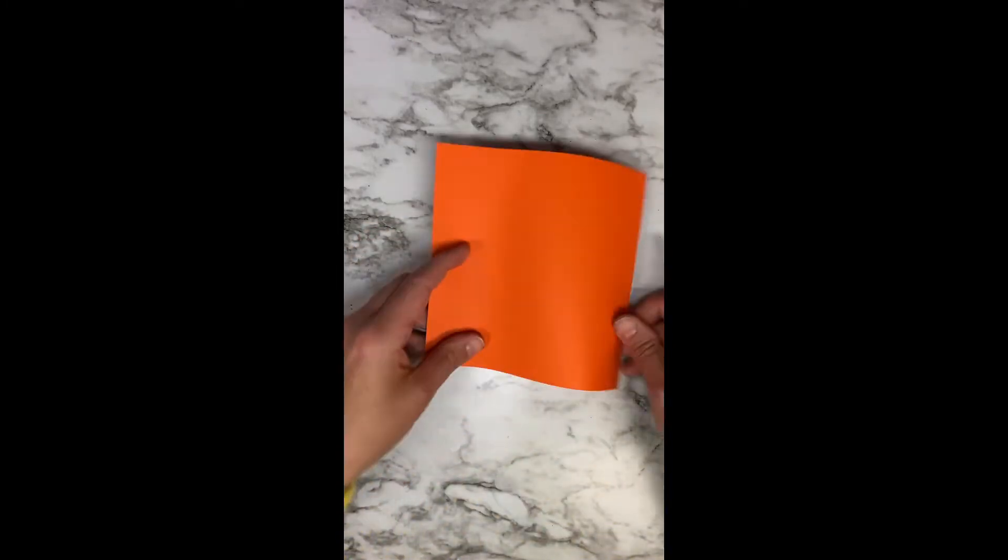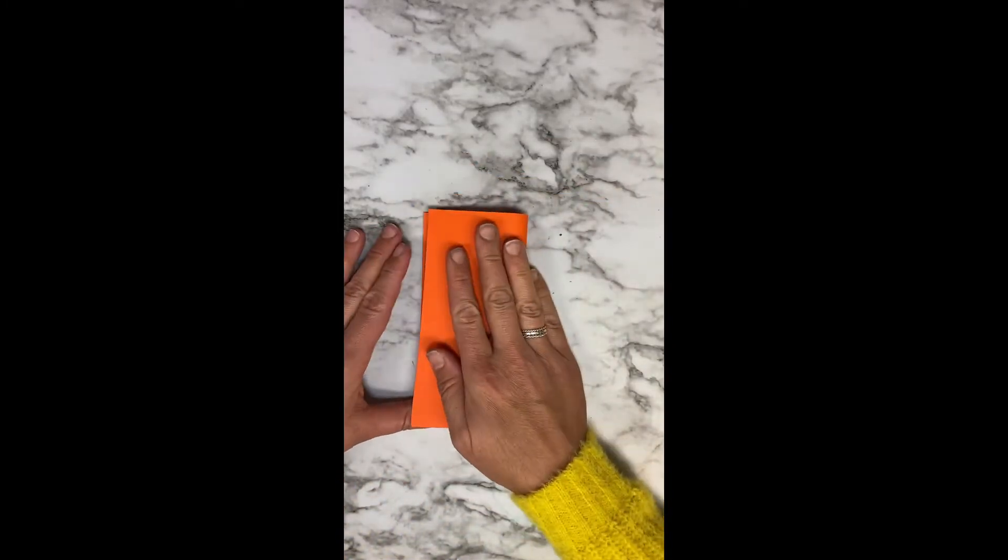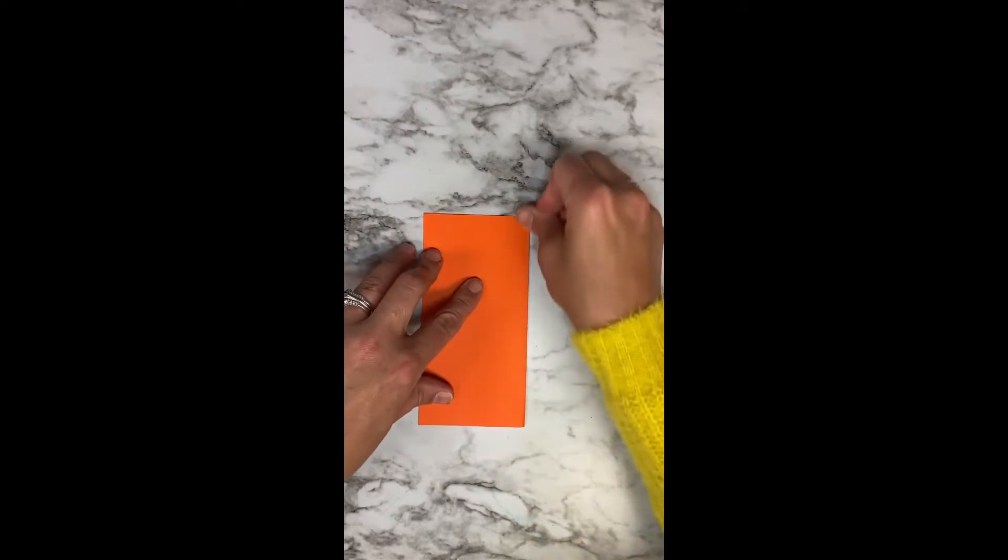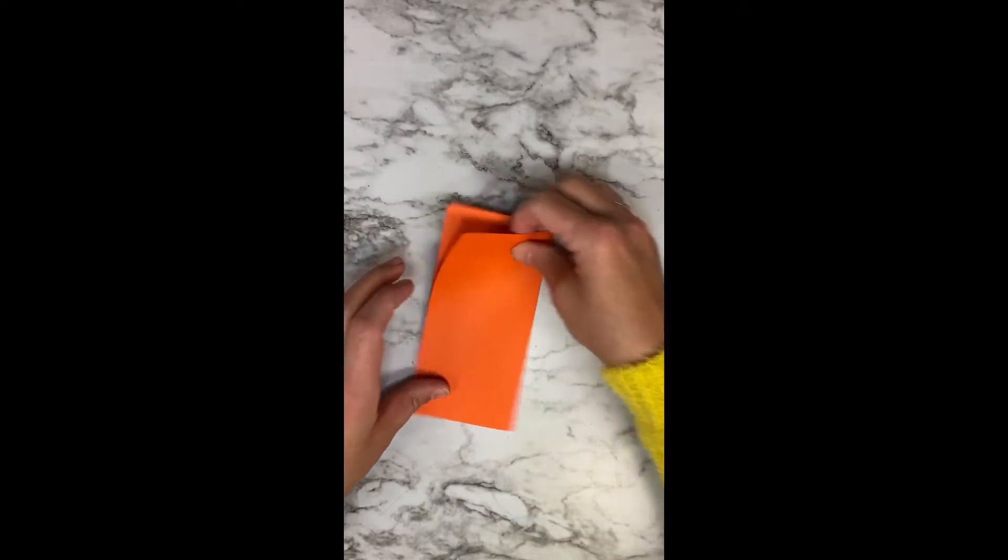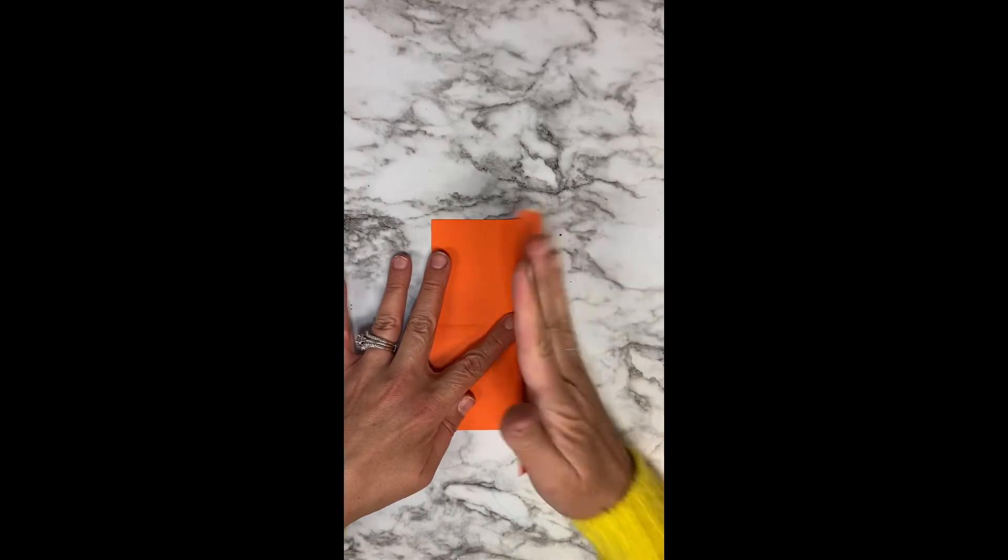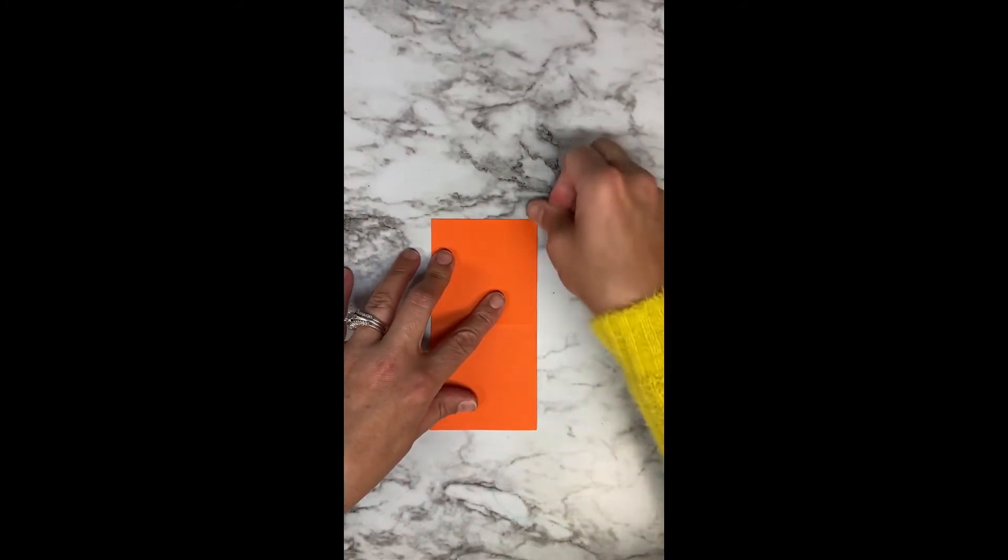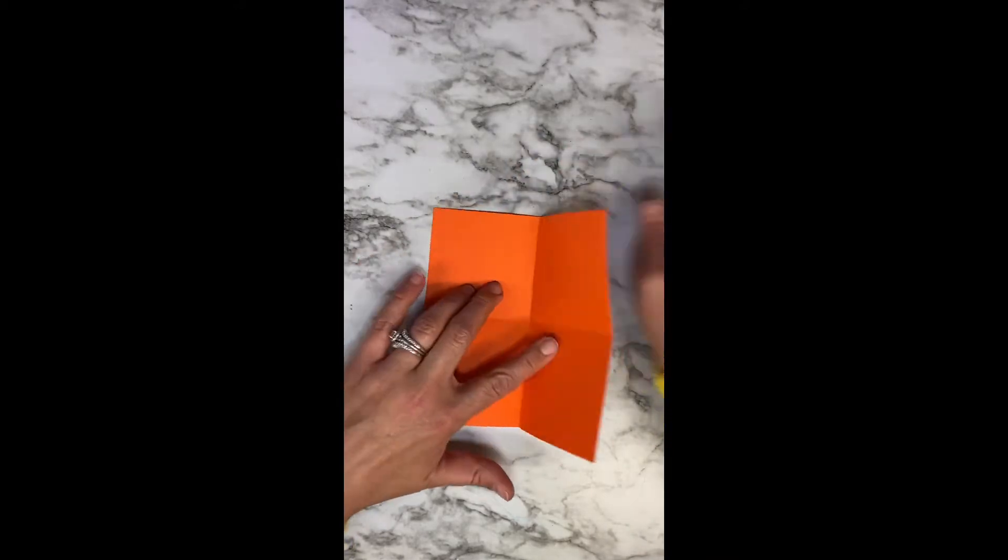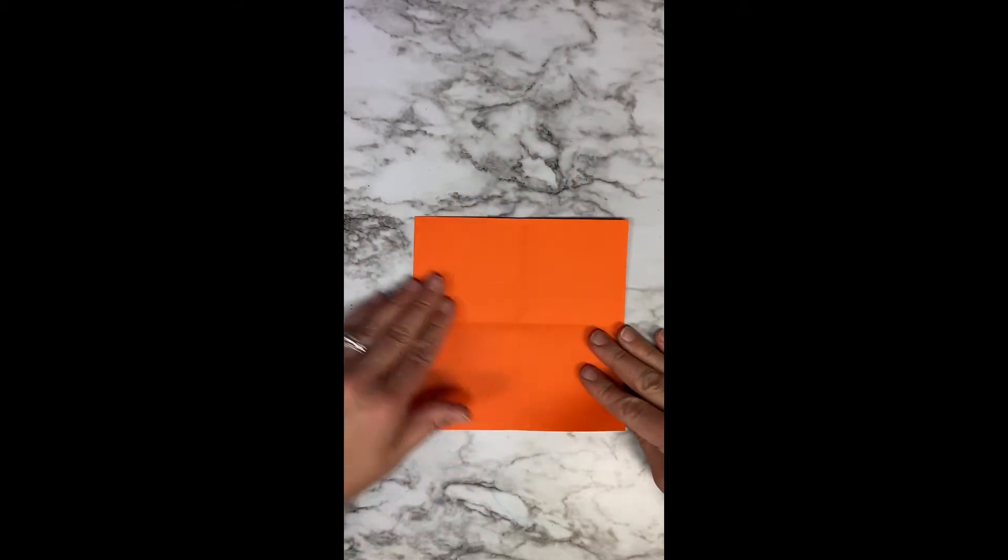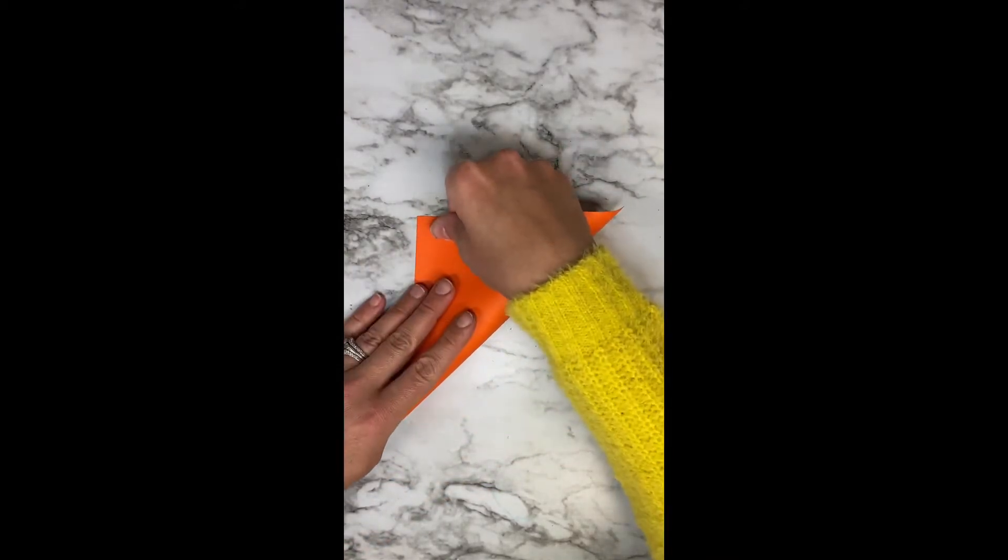One more time. You're going to fold it in half. Open it, fold it in half the other way. Sometimes you can call these hamburgers and hot dog folds, but this is a square piece of paper so it doesn't really work. And then once corner to corner.